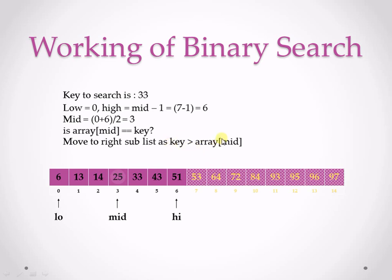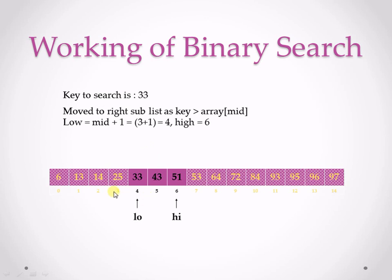Here my key 33 is greater than array of mid which is 25, so I need to move to the right subtree. To move to the right subtree I update the low position — high stays as it is, and my new low will be mid plus 1, which is 3 plus 1 equals 4. To move to the left subtree I would update high by subtracting 1 from mid. So now my new low is 4 and high remains 6, and I focus on this right sublist only.